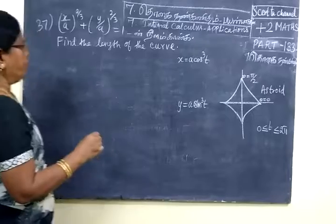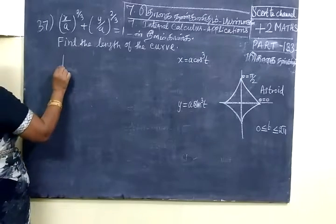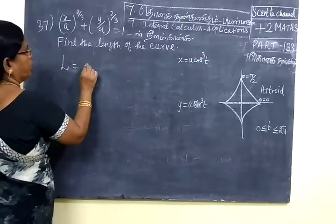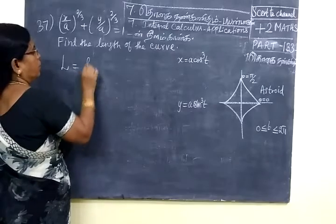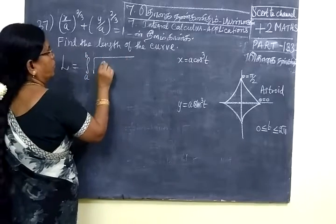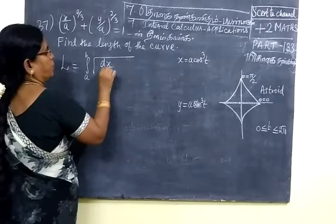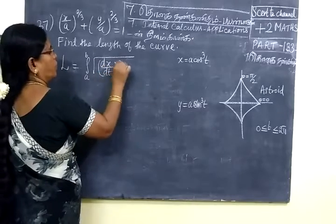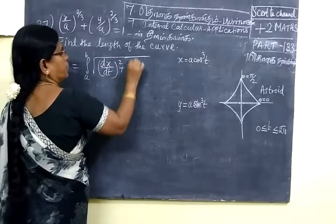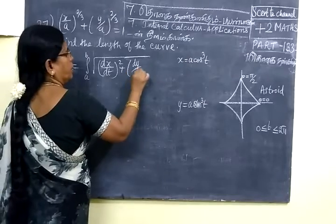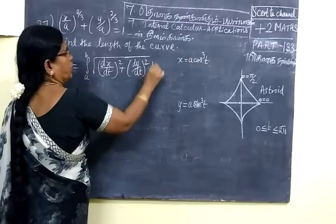This is 4 times. This is the length of the curve. Integrate a to b, the root of (dx/dt)² plus (dy/dt)² into dt.